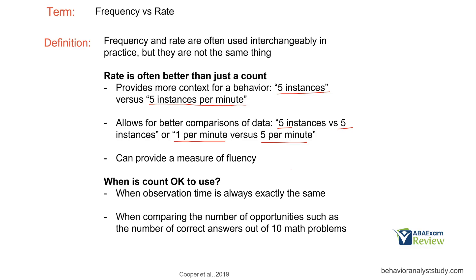When is count okay to use? A count is fine and doesn't take a lot of resources — it can be done pretty much anywhere. If your observation time is always the same, say you always have a two-hour session, then just count it up, and later you can convert that to rate if you choose. Or when comparing the number of opportunities, such as the number of correct answers out of 10 math problems — if we have 10 total opportunities and we want to figure out how many each learner got correct, we can use a count. So rate is often better than just a count, but count is still viable.